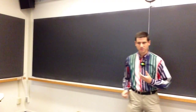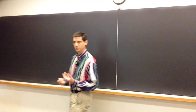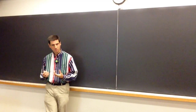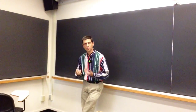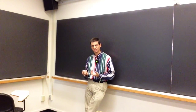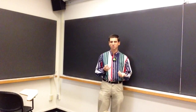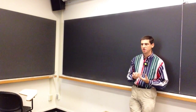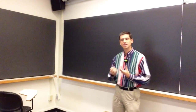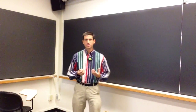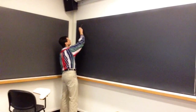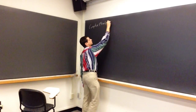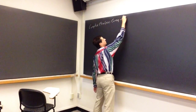Today I want to talk about some of the consequences of the argument principle. The argument principle allowed us to easily count the number of zeros minus the number of poles of a function inside a region. The first question you should ask is: why do we care about the number of zeros and poles? Well, for a lot of things, if we know where the zeros and poles are and what the multiplicities are, this gives us a huge amount of information about the function.